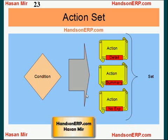We already know that we can define multiple actions and put them in an action set. All the actions would be executed. You can have detail actions, summary actions, and no exception actions all put in one set. When no exceptions are found, no exception actions are executed, and summary and detail actions will not be executed. When exceptions are found, detail and summary actions are executed — detail actions are executed once for each exception, and summary actions are executed only once for all exceptions.